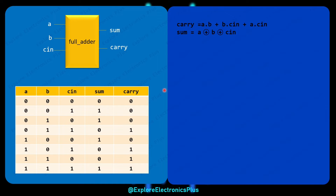To get the expression for carry and sum, we can use the K-map method for simplification. The carry expression is: A·B + B·C_in + A·C_in. The sum expression is: A XOR B XOR C_in — meaning XOR of all three inputs gives you sum.